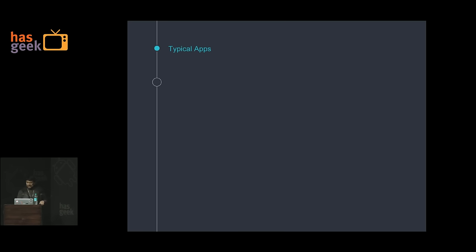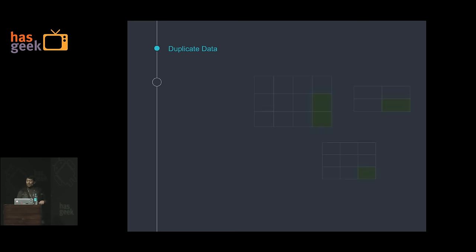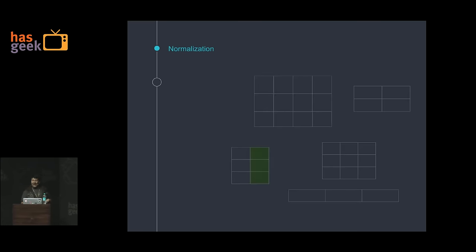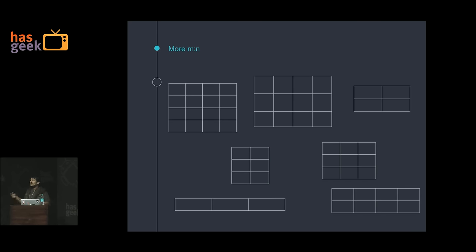As your data grows, the tables will grow. As you are growing your app, you realize you have duplicate data. What do you do with duplicate data? You normalize it. Normalization leads to more tables. As your app keeps growing, you find there are many-to-many relationships. What do you do then? You create even more tables to maintain those relationships, and now you have all this metadata of many-to-many relationships.